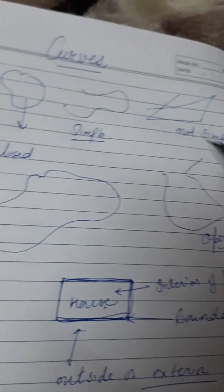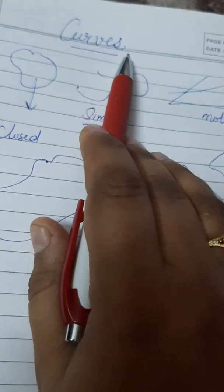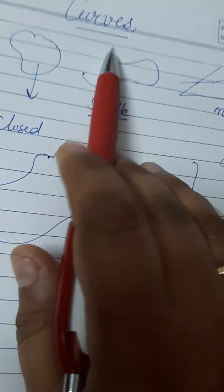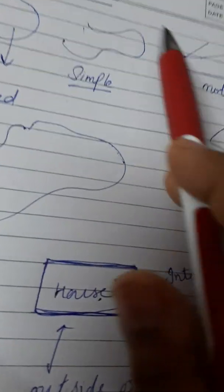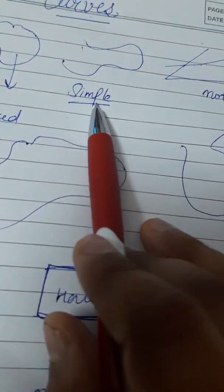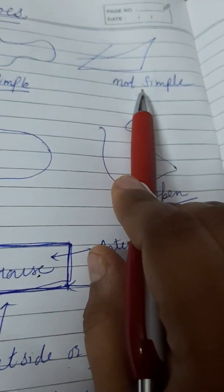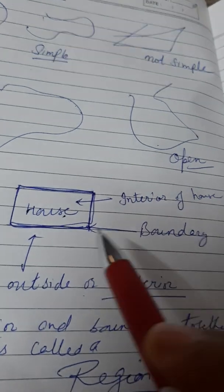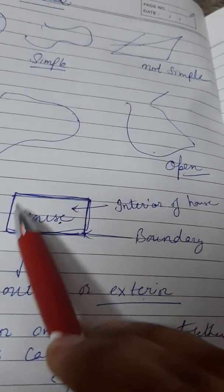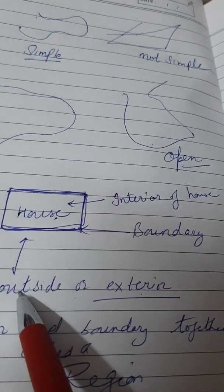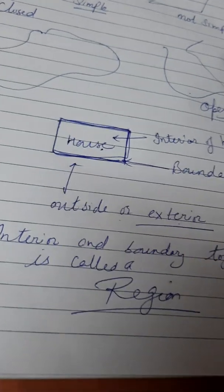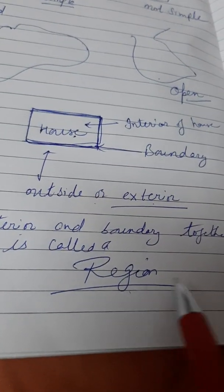So first we have seen what are curves — curves are just the result of our doodling, drawn without using a ruler. Curves which do not cross themselves are called simple curves, and those which cross themselves are called not-simple curves. If a curve is closed it is called a closed curve, and if it is open it is called an open curve. A closed curve has three things: interior, boundary, and exterior. If we take interior and boundary together, that is called the region.